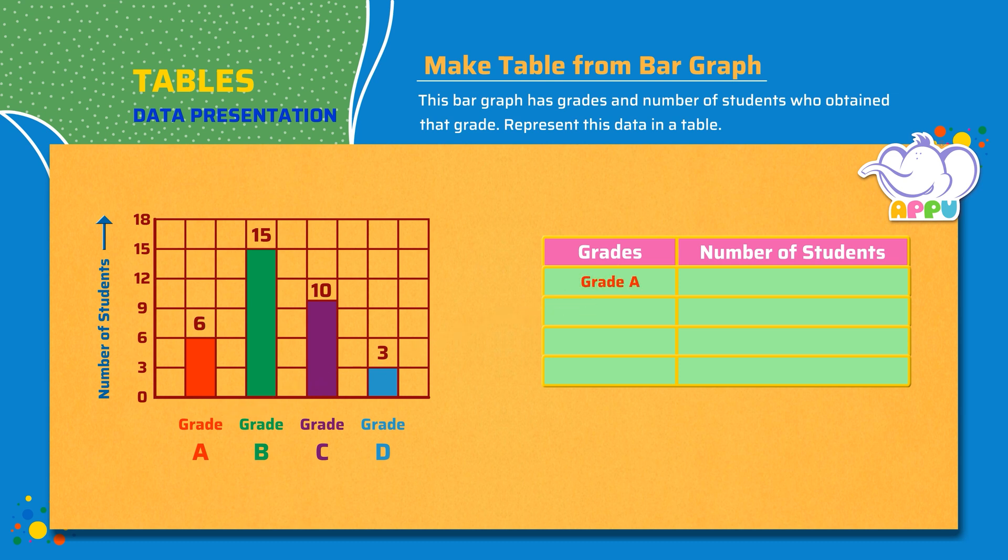Grade A was scored by 6 students. Grade B was scored by 15 students. Grade C was scored by 10 students. And Grade D was scored by 3 students.